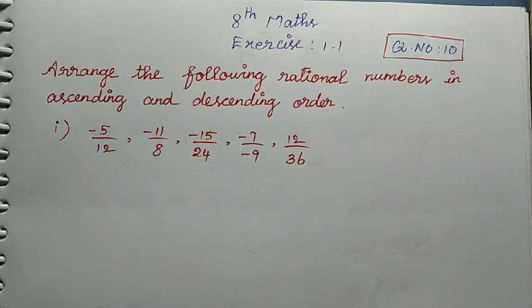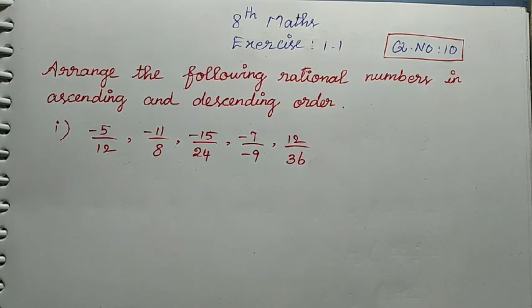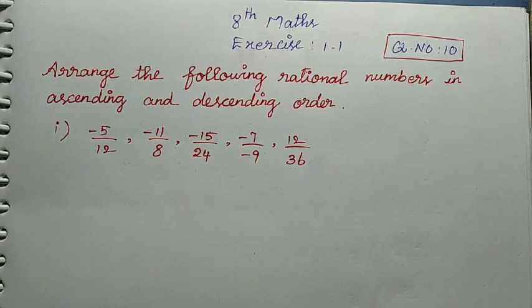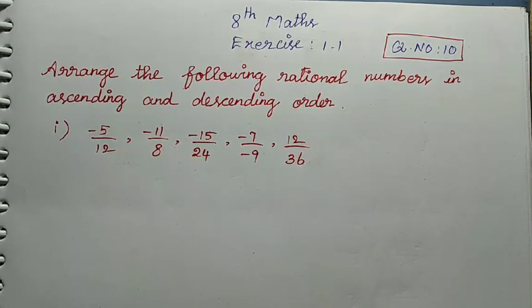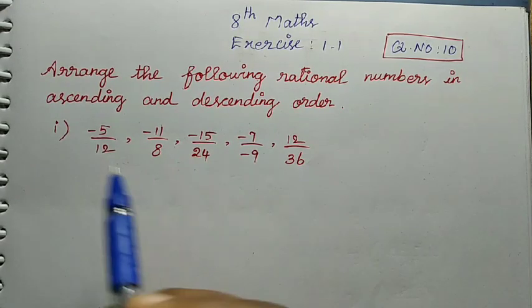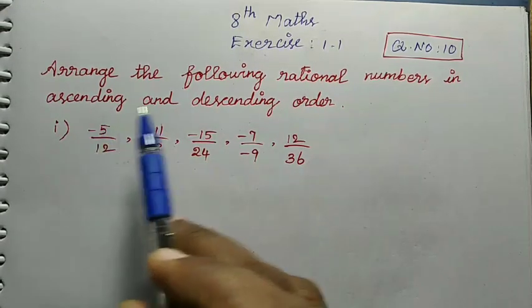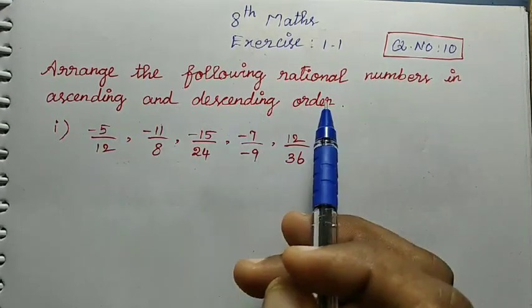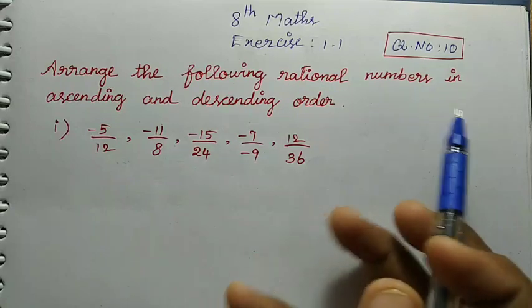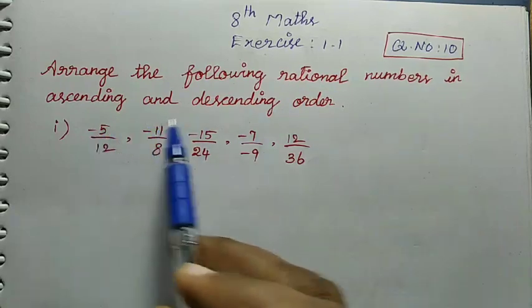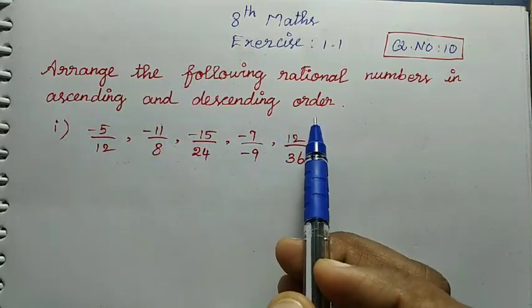Hello friends, welcome to VM Literacy Channel. In our channel, 8th Standard Maths Full Book Edition Exercise 1.1, Question No. 10: Arrange the following rational numbers in ascending and descending order.